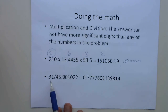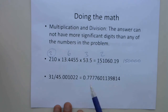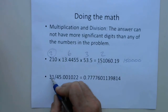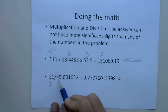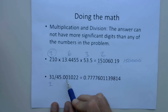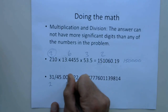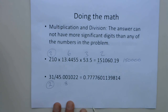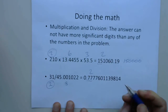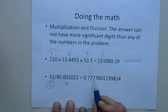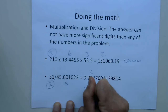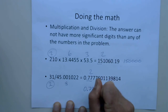With division, the rule is the same. Dividing 31 by 45.001022 — on our calculators we get a long decimal. Where do we round it? 31 is only two significant figures, while 45.001022 has eight significant figures. So of course we're going to round our answer to two significant figures. We look at the next digit — it's a seven, so we round up — giving us 0.78.